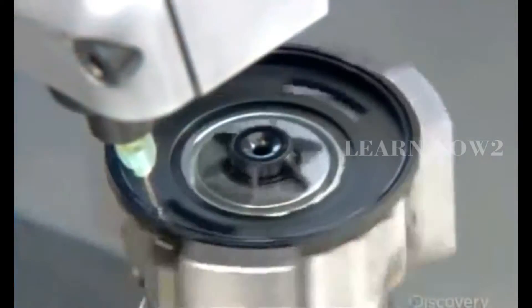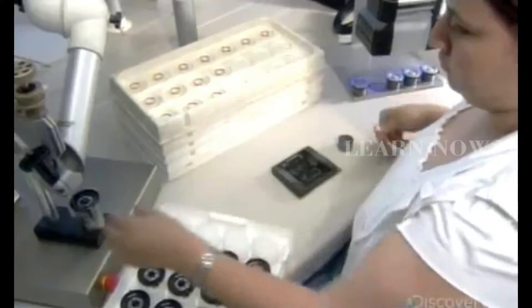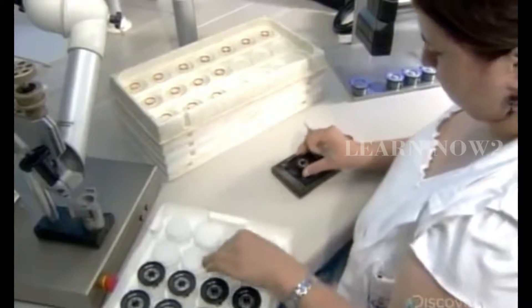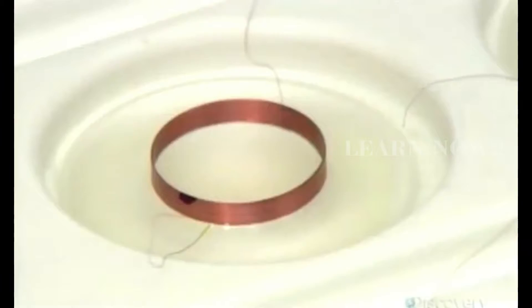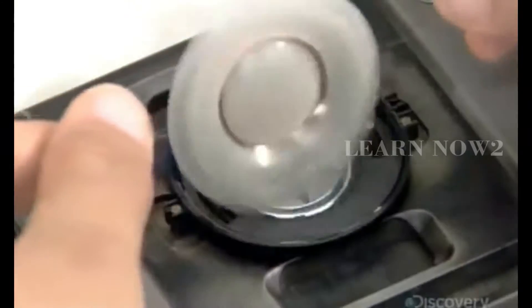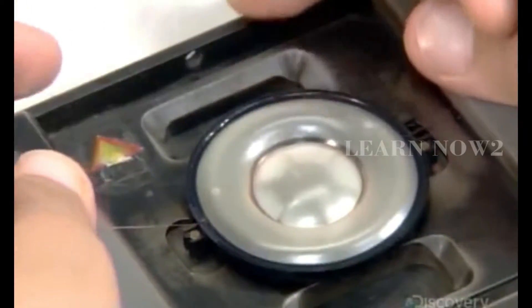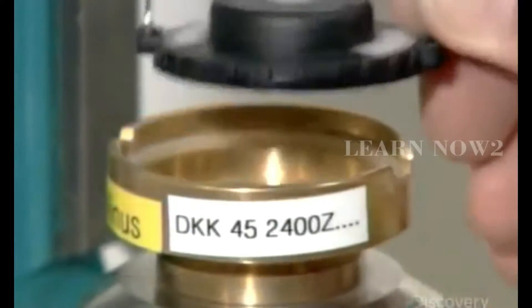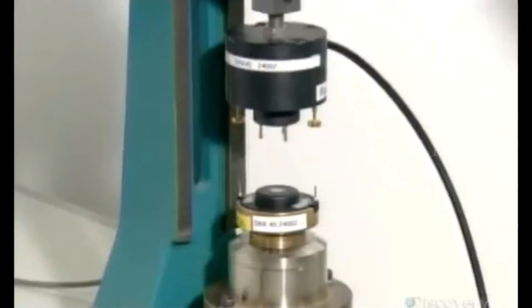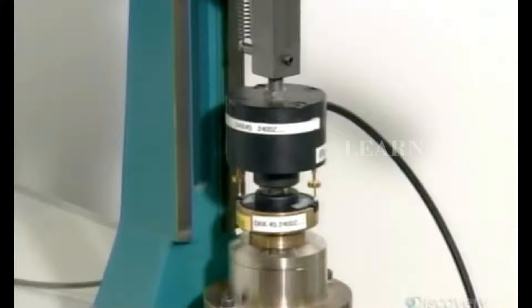The plastic housings each contain a magnet. The next technician installs the diaphragm and voice coil assembly on that housing. This takes skill, because the coil must be positioned precisely for the best sound quality. And this headphone speaker is now ready for an audio check.